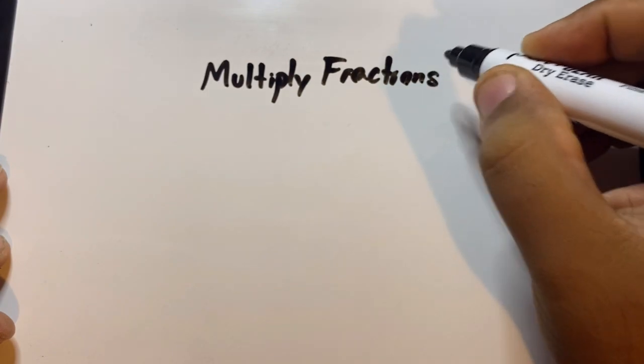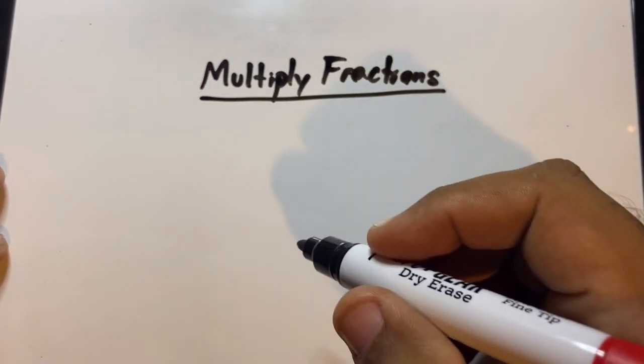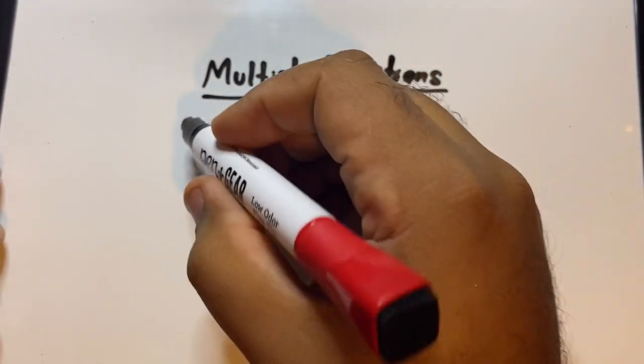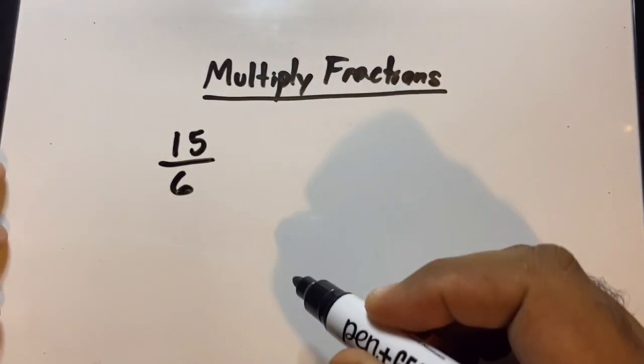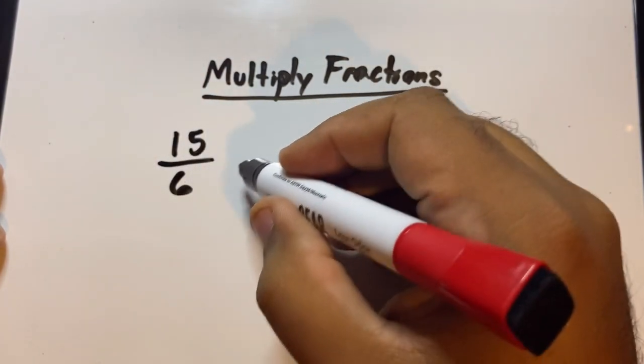We're going to turn an improper fraction into a mixed fraction. If you have not studied what an improper fraction is, it is when the number on top of a fraction is bigger than the number on the bottom. And we're going to turn this fraction into a mixed fraction.